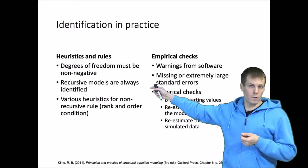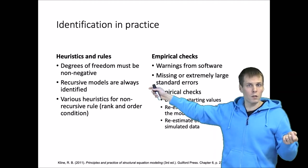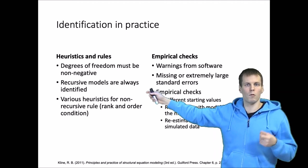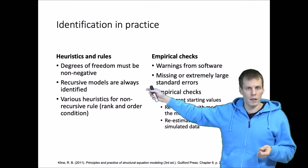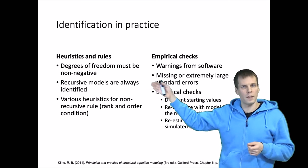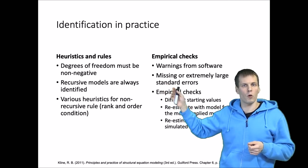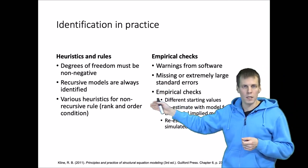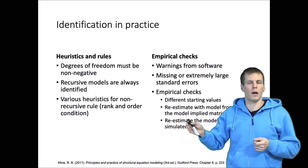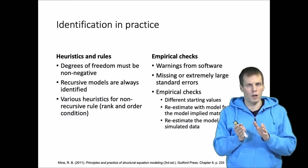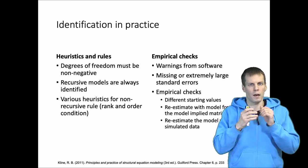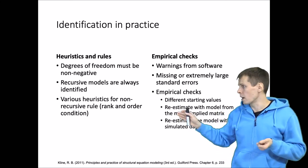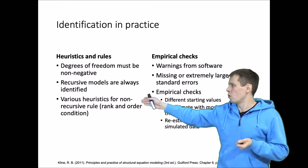Recursive models are always identified — that's a good thing to know. So if there are no feedback loops and no correlations between error terms, then the model will always be identified. There are also various heuristics that can be applied to non-recursive models, explained in another video.